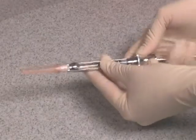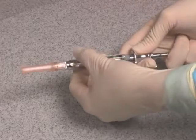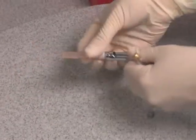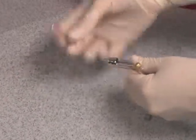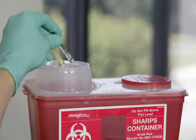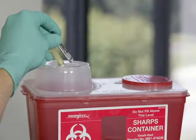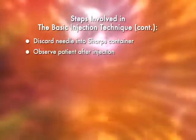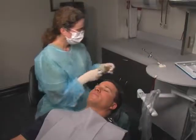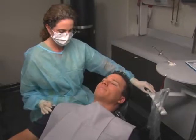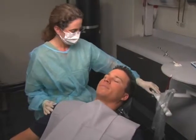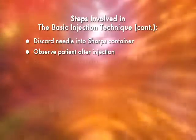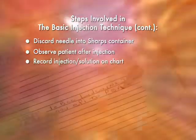To disassemble the syringe, retract the piston and remove the used cartridge, unscrew the needle, and dispose of both in a sharps container. Observe the patient after the injection. Ask: 'Is that comfortable?' Then record the injection on the patient's chart.